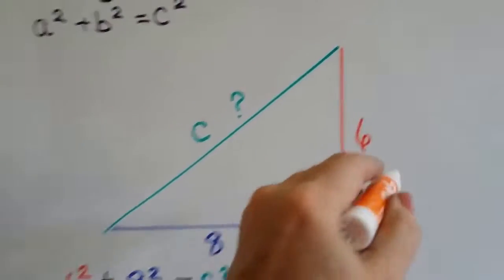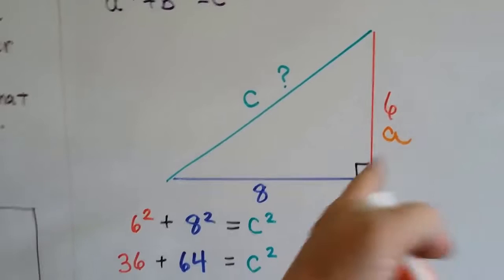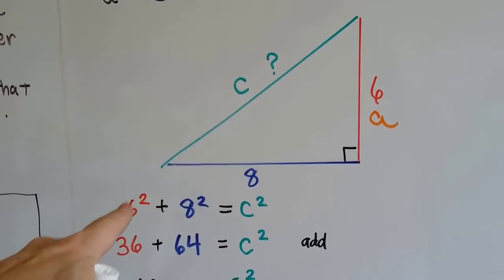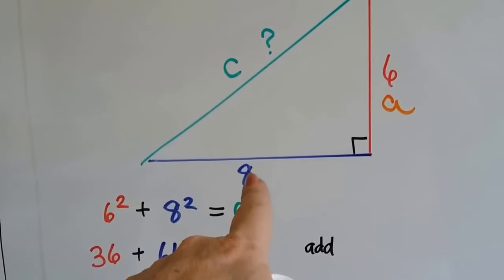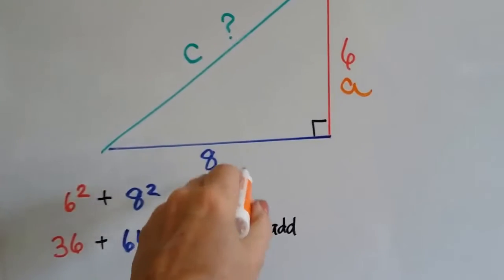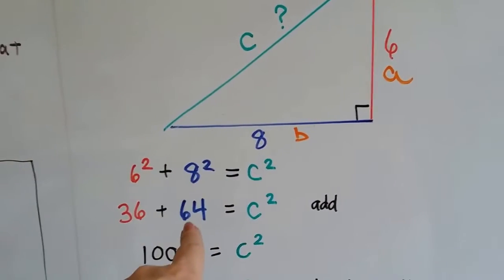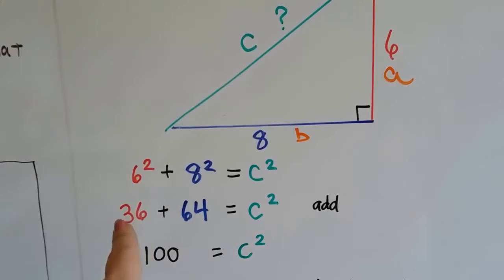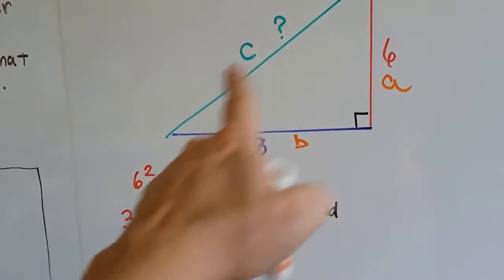a² – this would be a right here – that's 6 times 6, because that's what squared means. So 6² is 36. This is side b, which would be 8 times 8, which is 64. So 36 + 64 is going to equal this side squared,